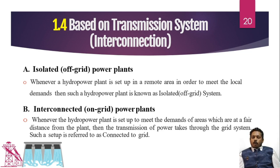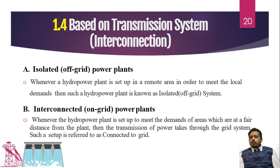The second type is where we have huge generation and must connect it to the grid — that is called an interconnected power plant. So these two types are classified based on transmission or interconnection.